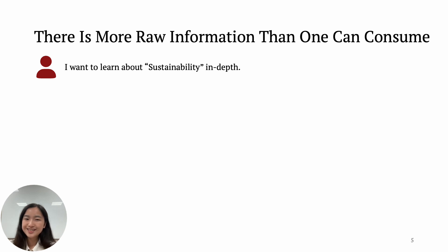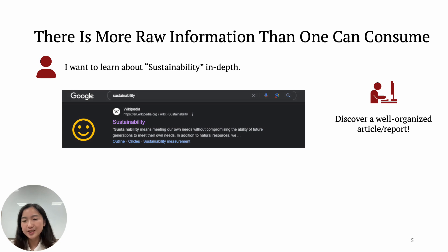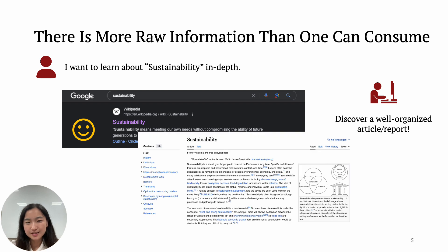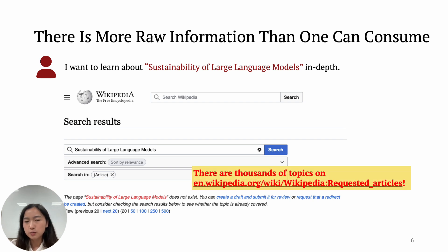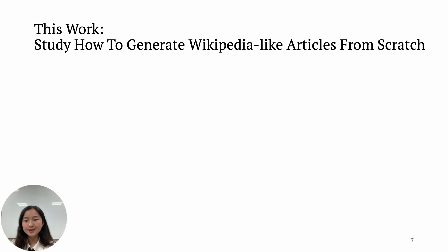So what's the happy situation? Perhaps it's when you find the top entry given by a search engine is not an ad but a well-organized article like Wikipedia. However, not every topic has a Wikipedia article. There are thousands of topics waiting to be written, but we just do not have enough manpower to do so. So in this work, we are trying to study how to generate Wikipedia-like articles from scratch to assist editors in creating more pages or directly help people's information-seeking process.